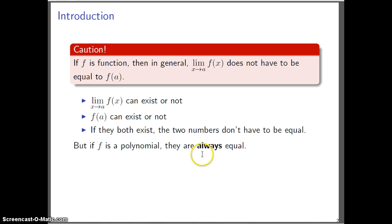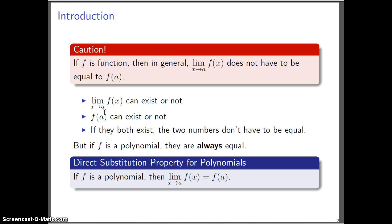However, if f is a polynomial, then these two numbers are always equal. So that leads to this thing, it's in the book, it's called the direct substitution property for polynomials. This right sentence right here is exactly the same as this. So if f is a polynomial, then if you have to compute this limit, you might as well just replace it with the y value of the function f at x equals a. But there is this requirement that f has to be a polynomial.